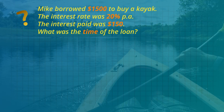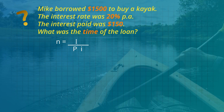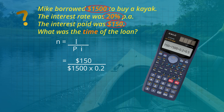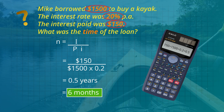Mike borrowed one thousand five hundred dollars to buy a kayak. The interest rate was twenty percent per year and the interest paid was one hundred and fifty dollars. What was the time of the loan? N equals big I divided by the other two — remember to write the interest rate as a decimal. So one hundred and fifty divided by one thousand five hundred divided by zero point two is zero point five years. Also remember that N is the number of years, so zero point five years is six months.